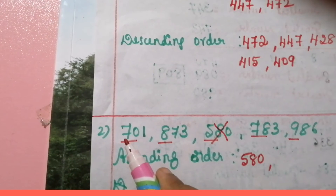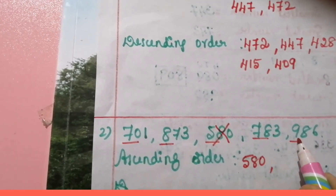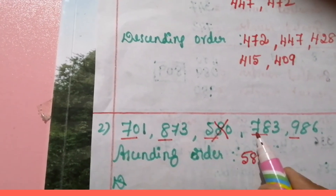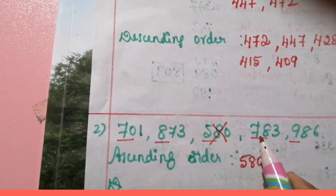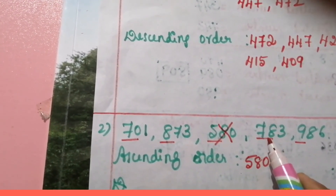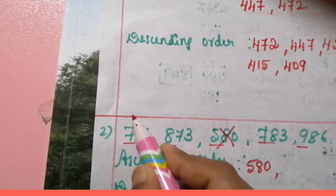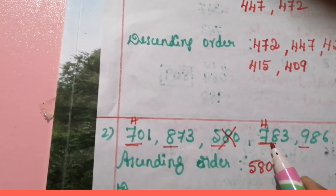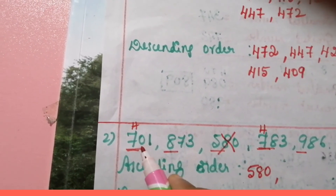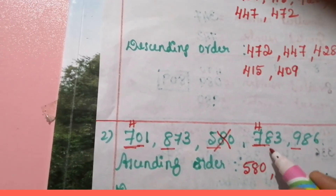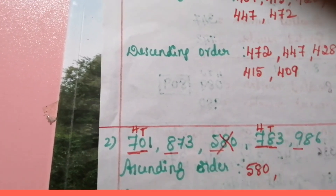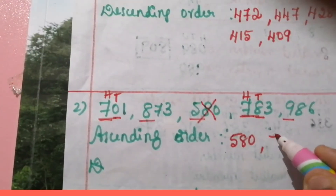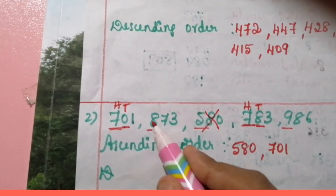Next, the remaining hundreds digits are seven, eight, seven, nine. Which is the smallest? Seven is the smallest, but there are two numbers with seven in the hundreds place — seven and seven are the same. So we have to compare the tens place. Zero is the smallest number there, so we write seven hundred and one next and strike it out.